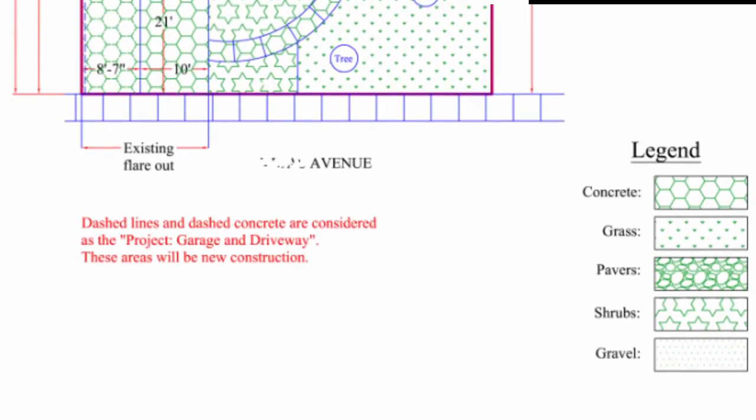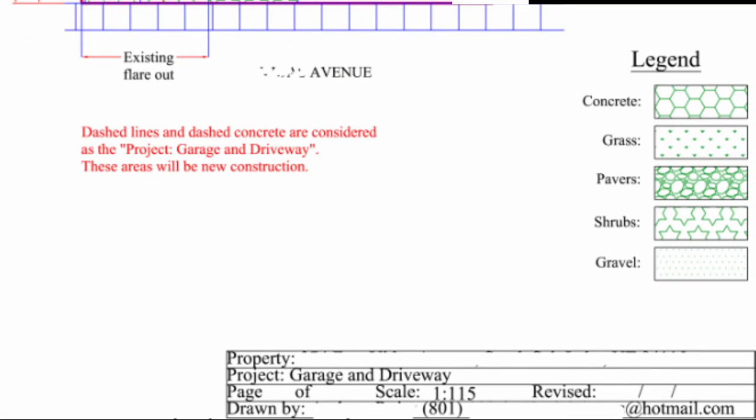With every blueprint you need to have the information on there such as the location of the property, the project, page number. The scale is also very important and the contact information. It's also good to have a revision date on there so you know when it was last revised.